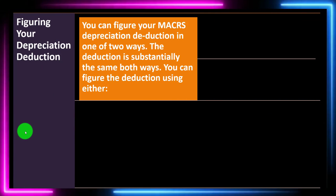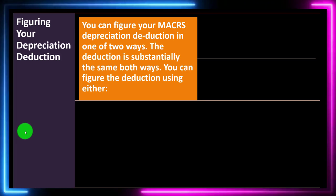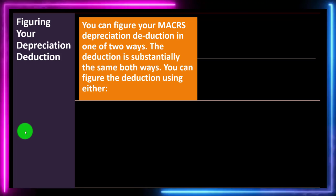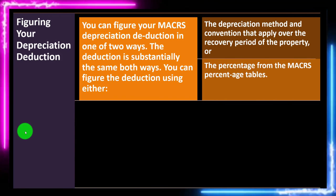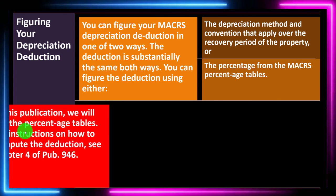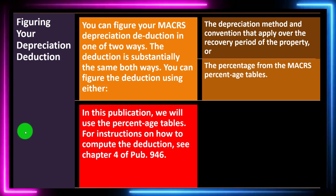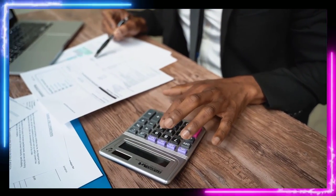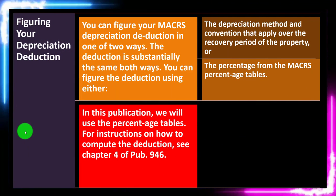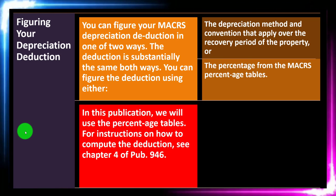You can figure your MACRS depreciation deduction in one of two ways, and the deduction is substantially the same for both. You can use the depreciation method and convention that applies over the recovery period — essentially a double declining balance calculation — or you can use the percentage from the MACRS percentage tables. In this publication, the percentage tables are used. See Chapter 4 of Publication 946 for more detail on the tables.